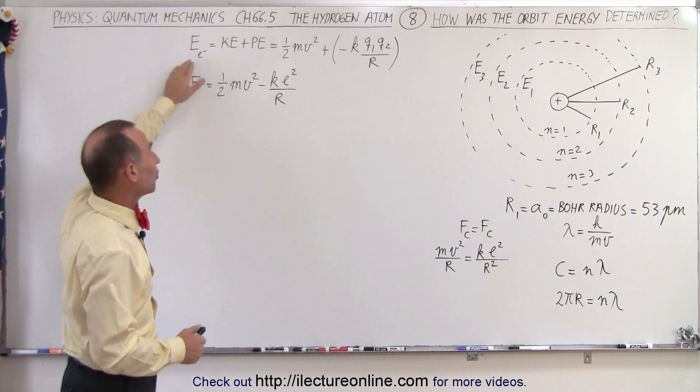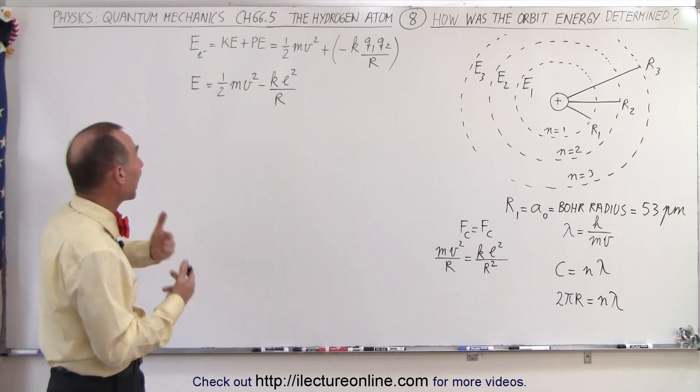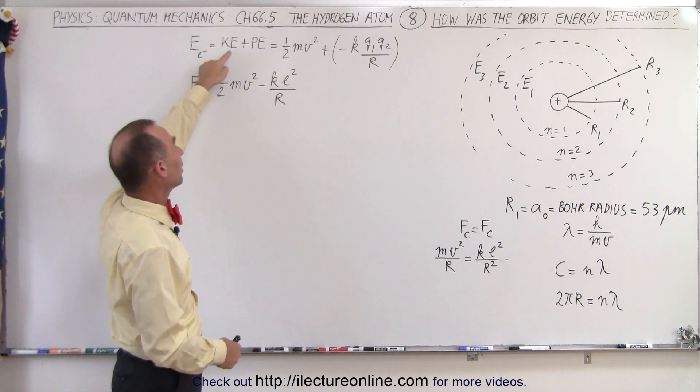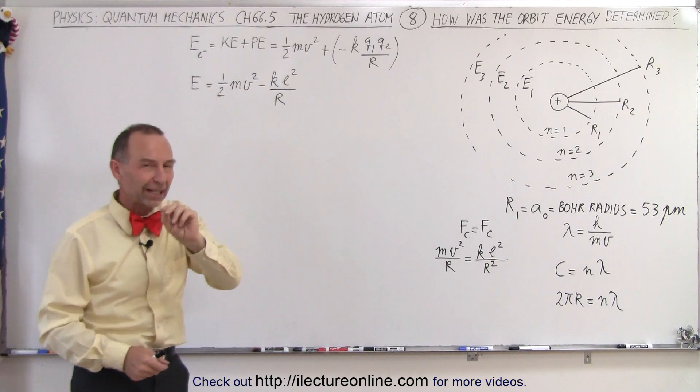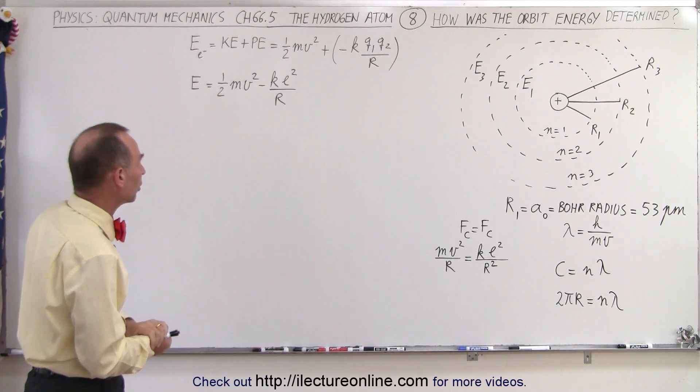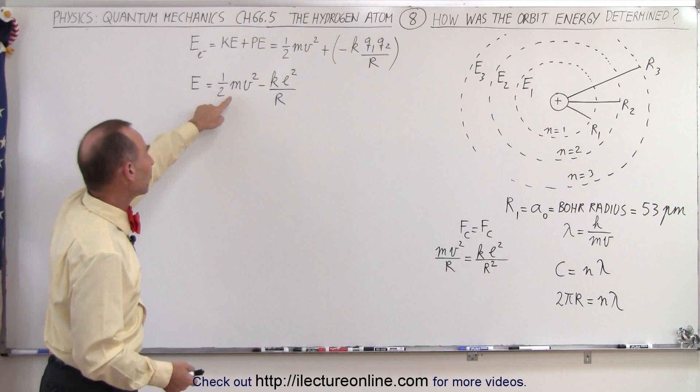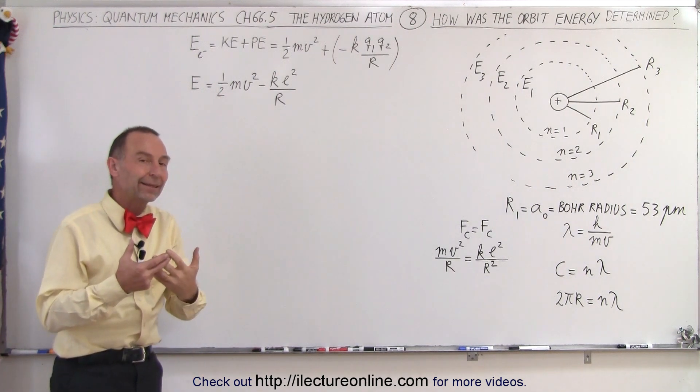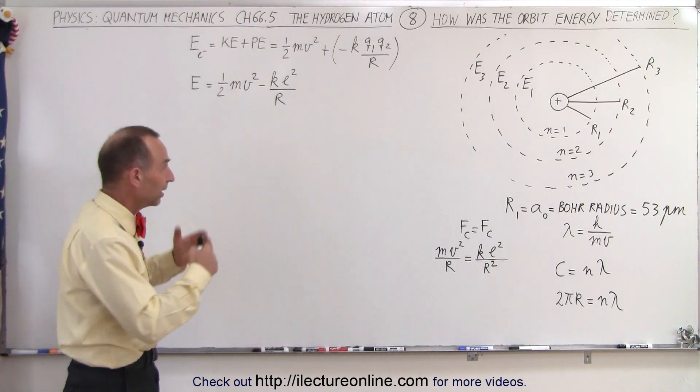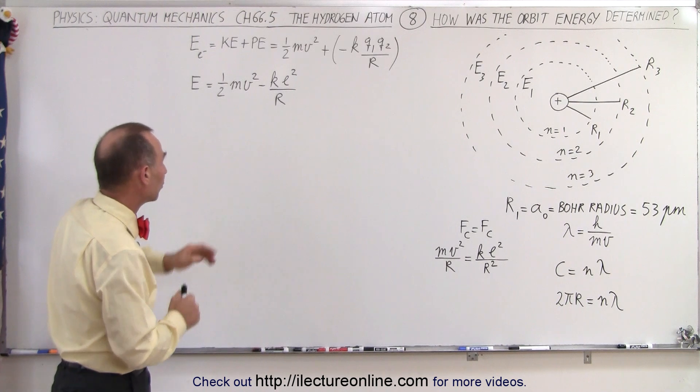First of all, the energy of a particle, in this case the electron, has to be the sum of the kinetic energy plus the potential energy of the electron in the orbit around the nucleus. The kinetic energy is always going to be 1/2 mv squared, presuming that this is non-relativistic, and in the case of the hydrogen atom it's not relativistic.